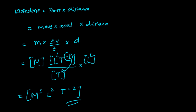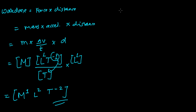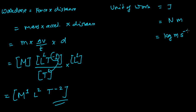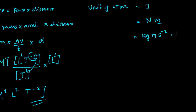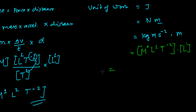That's the dimensional formula of work done from the formula. And if you know the unit of work done — that's Joule. Joule is Newton times meter, and Newton is kg·m·s⁻². So kg means M¹, meter gives L¹, s⁻² gives T⁻², and the extra meter gives L¹. Summing up: M¹, L²,  T⁻². That's the dimensional formula for work done using the unit method.